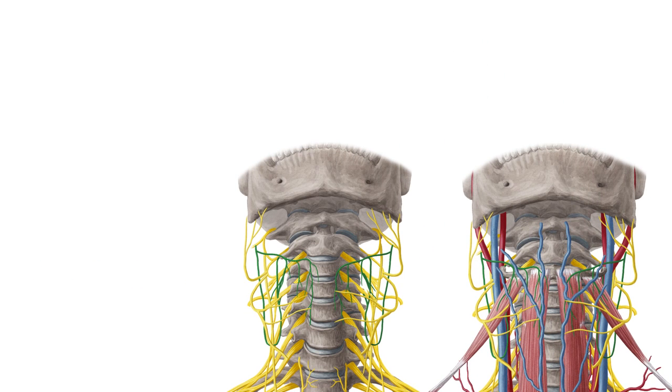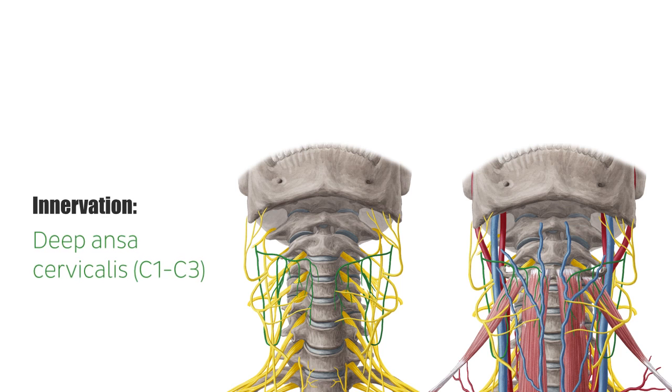All four infrahyoid muscles are supplied by the deep ansa cervicalis, which arises from the cervical plexus.